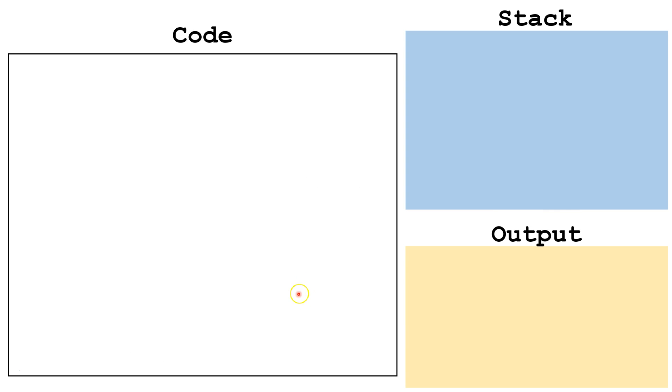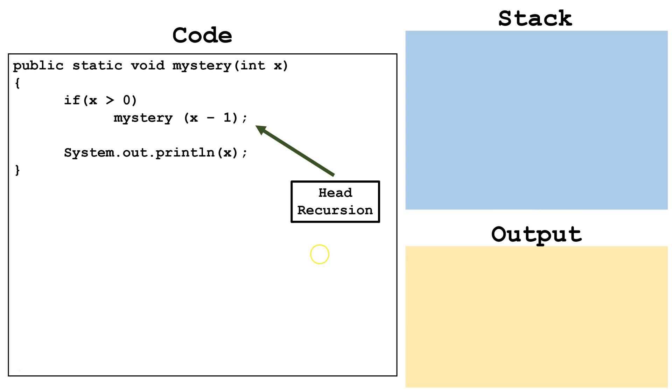Let's write some code for head recursion. We can see the recursive call is at the top or the head of the method, before the other processing down here.